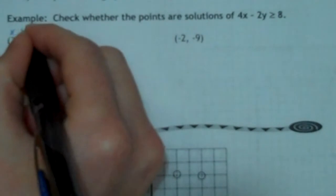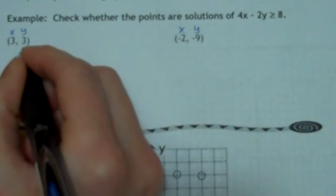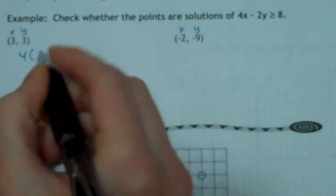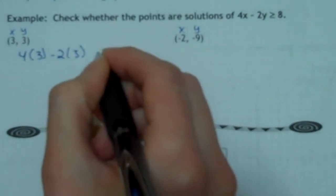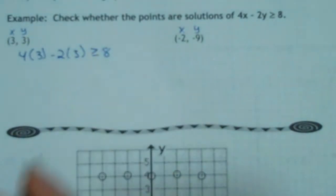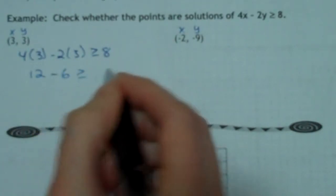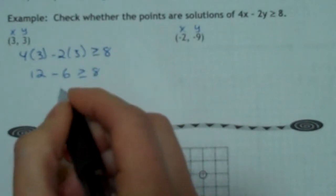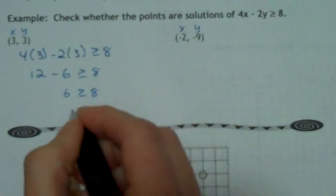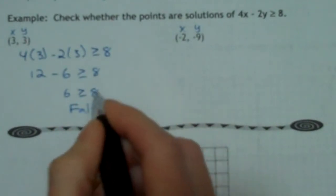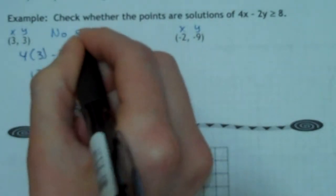Remember, x is first and then y. So let's check the first one. We've got 4, and then instead of x, I'm going to write 3, minus 2, and instead of y, I write 3, is greater than or equal to 8. So 4 times 3 is 12, 2 times 3 is 6, is greater than or equal to 8. So 12 minus 6 is going to be 6, is greater than or equal to 8. And that is going to be false, because 8 is bigger than 6. So that's not a solution.